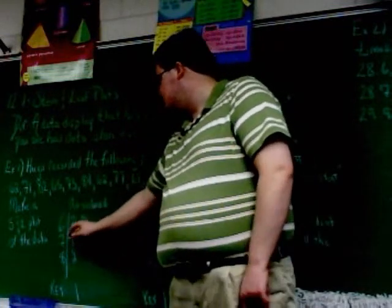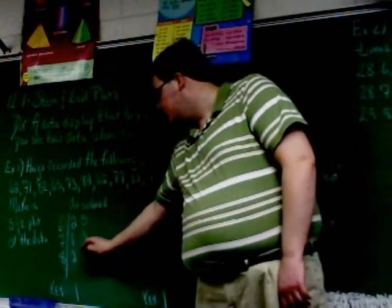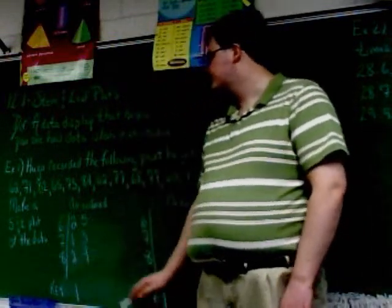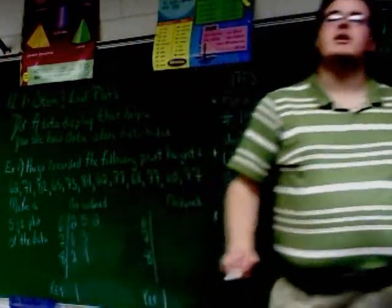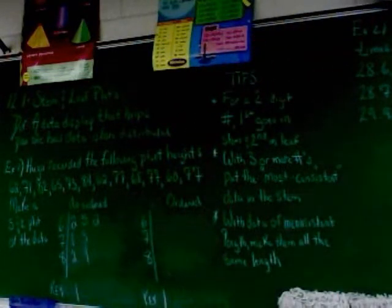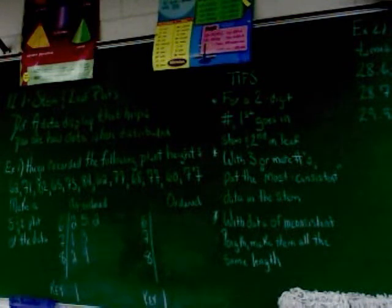73 comes next, so next to the seven goes three. 84, next to the eight goes four. 62, next to the six goes a two. Now, you might say, well wait, there's already a two in that list. Do I need to put them again? The correct answer is yes, you do. The point of a stem and leaf plot is to be able to find the mean, the median, the mode, and the range more easily. But if you leave a number out, obviously, that's going to make that calculation inaccurate. So yes, you have to include it even if it were to happen to repeat.